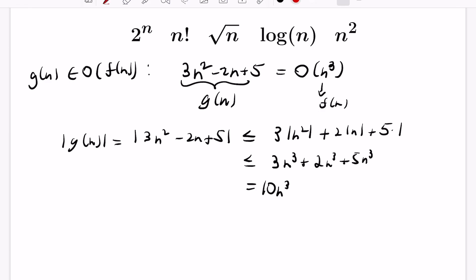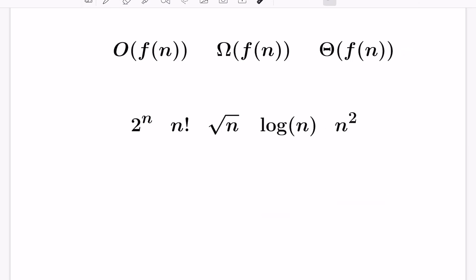All right, so if we pick our c to be 10, we can pick our n naught to be 1, and we're happy. And we see that n cubed dominates asymptotically this quadratic function. And we can see then that in general, if we had a polynomial p of n that had degree k, then this will be big O of n to the k plus 1 in general.